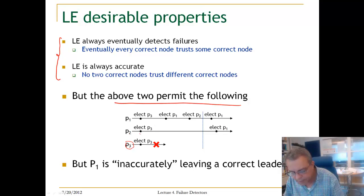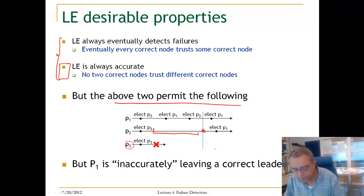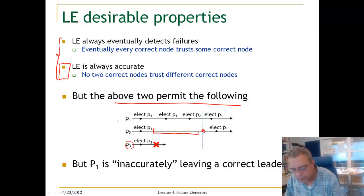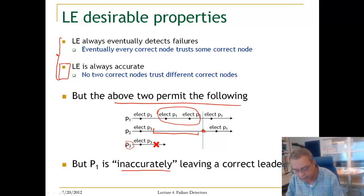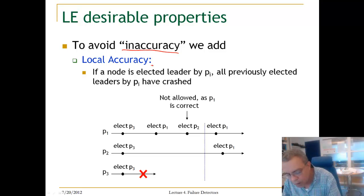Looking at P2, it elects P3 and later elects P1. If we look at the second property — no two correct nodes trust different correct nodes — during a period of the execution P2 does not trust a correct node. Therefore P1 is allowed to do this undesirable behavior of switching from one leader to another. We really want to avoid P1 inaccurately leaving a correct process. To avoid this inaccuracy, we add one more property.